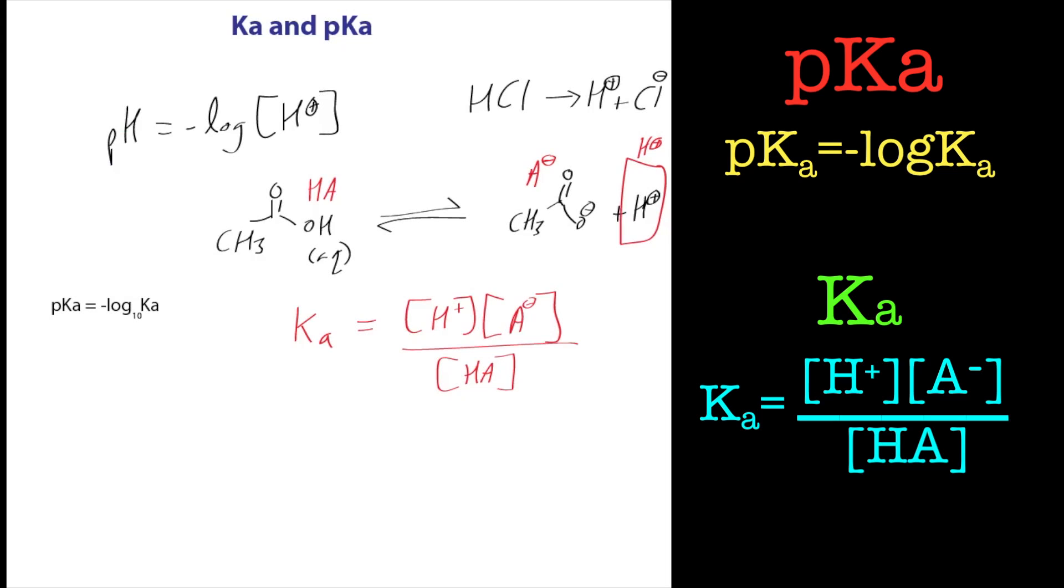If we want to work out the equilibrium constant, and we know what the pKa is, again, we just rearrange this equation, raising to the power of 10, and we get the negative pKa value there. So 10 to the minus pKa will give us our Ka value.